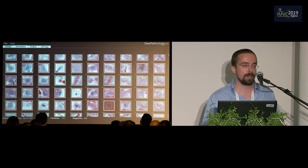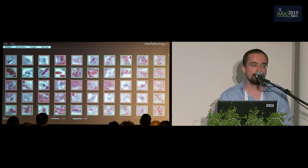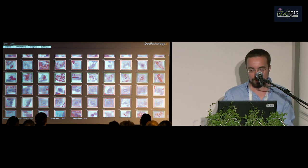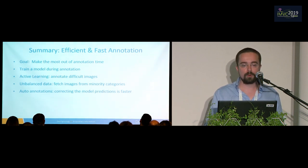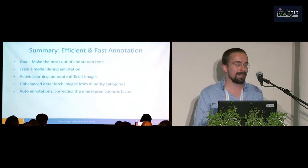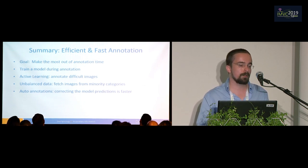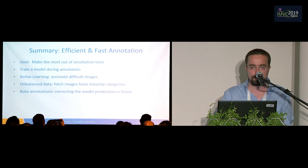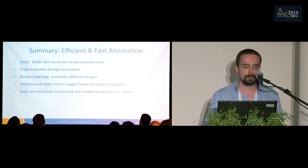This type of annotation is very fast. We can get to a dataset that has a few thousands of cells in a matter of a minute, which is a lot faster than otherwise. To summarize: we had the goal of making the most out of annotation time. To do that, we're training a model during the annotation, using active learning to fetch difficult images that will improve the model the most. We also modified the active learning algorithm to tackle the unbalanced data problem, which is something you usually have with medical datasets. Then, because we have a model, we can also use auto-annotations — just use the predictions from the model and correct them — which is a lot easier than annotating everything ourselves.